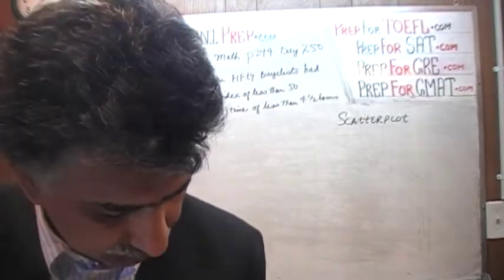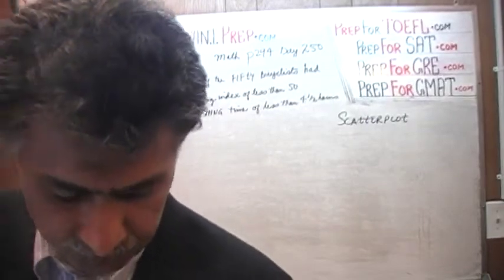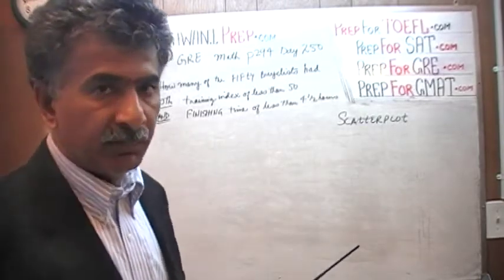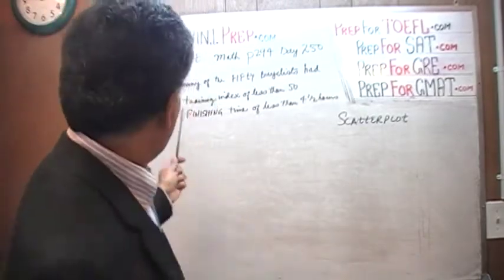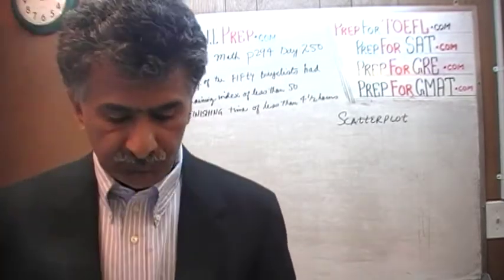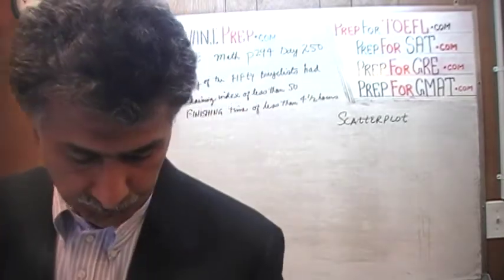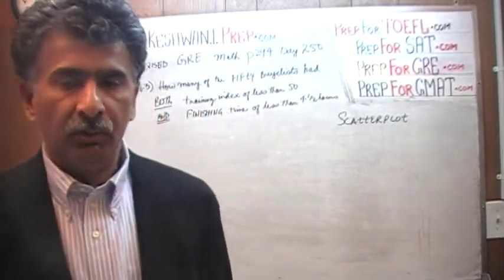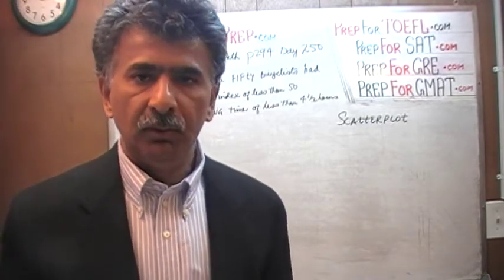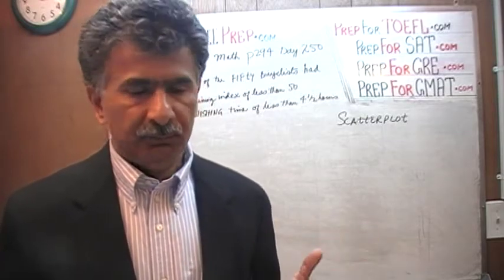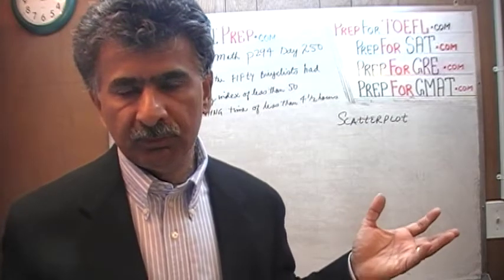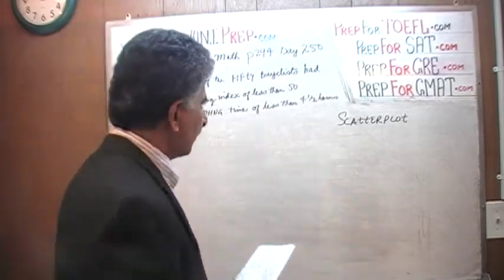The very first question they are asking has two parts. Part one asks: how many of the 50 cyclists depicted on the scatter plot had both a training index of less than 50 and a finishing time of less than 4.5 hours? The only reason anyone would get this wrong is carelessness. The problem is very straightforward — you just have to pay attention and not miscount. Let me reproduce the graph.